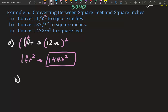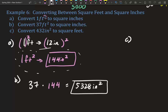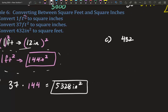For part B: converting 37 square feet to square inches, we multiply by 144 and get 5,328 inches squared. Going feet to inches we multiply because there are more inches than feet. Going inches to feet, we divide because it's the direct opposite. To convert 432 inches squared to square feet: 432 ÷ 144 = 3 feet squared.